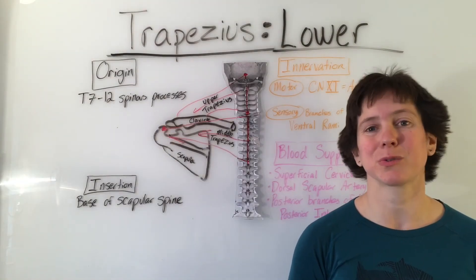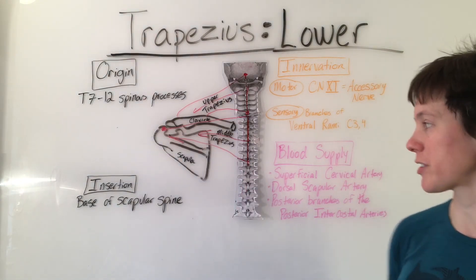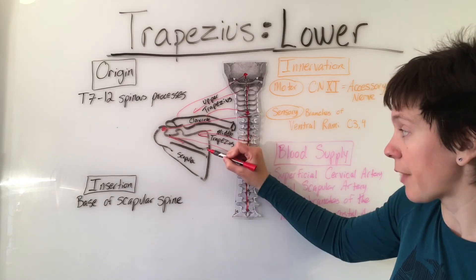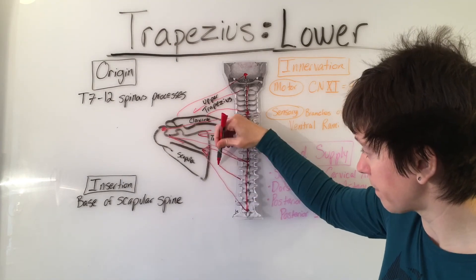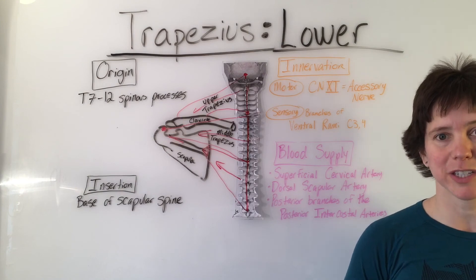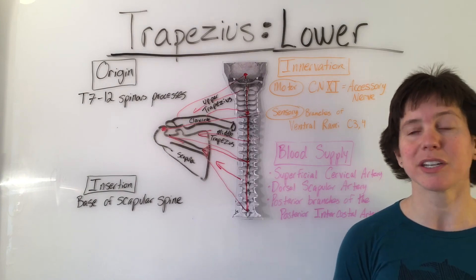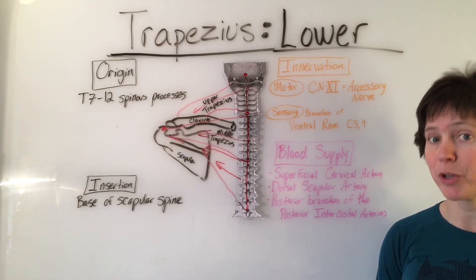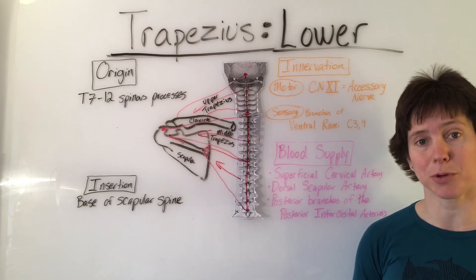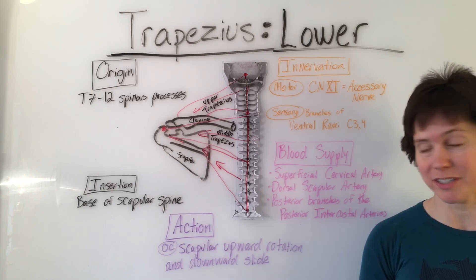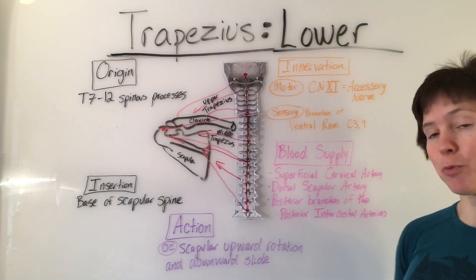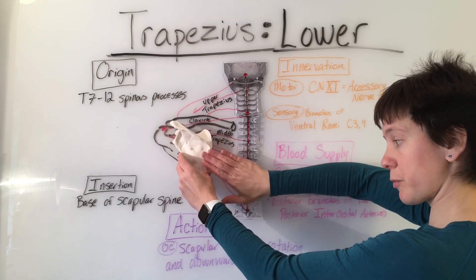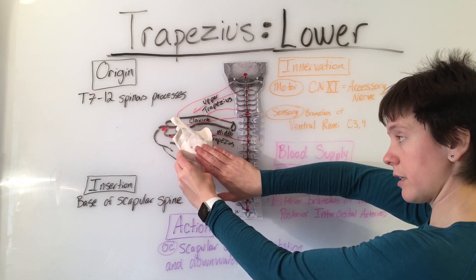The lower trapezius originates on the spinous processes of the lower half of the thoracic spine, T7 through T12, and inserts on the scapula at the triangle at the base of the scapular spine. It has the same innervation — motor from cranial nerve 11, the accessory nerve, and sensory from branches of the ventral rami C3 and C4 — and the same blood supply: the superficial cervical artery, the dorsal scapular artery, and the posterior branches of the posterior intercostal arteries. The open chain action of the lower trapezius is scapular upward rotation and downward slide. On our model, since the muscle is pulling in this direction relative to the center of rotation at the star, it contributes to downward slide and upward rotation.